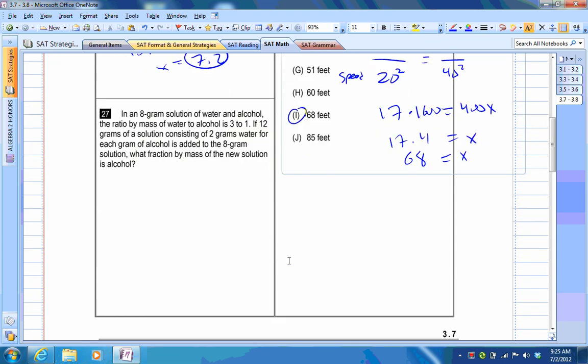And then this one I would probably consider a challenging or hard one, but I think you can do it. You have an 8 gram solution of water. The ratio of water to alcohol is 3 to 1. Then you have a 12 gram solution where the ratio is 2 to 1. If you add those two solutions together, what is the fraction of alcohol in the new solution?